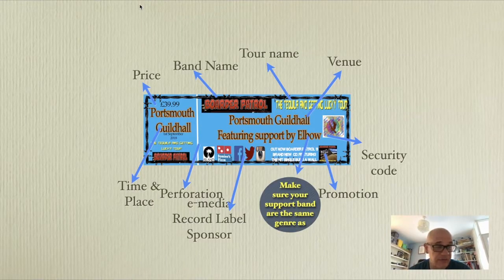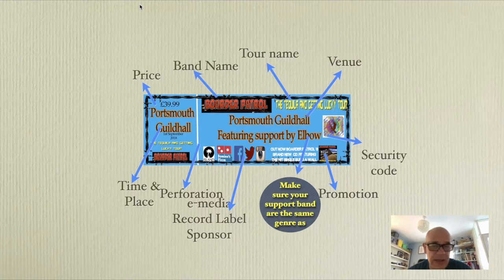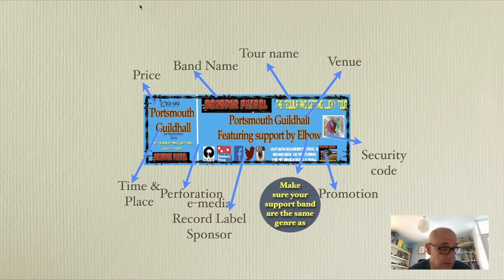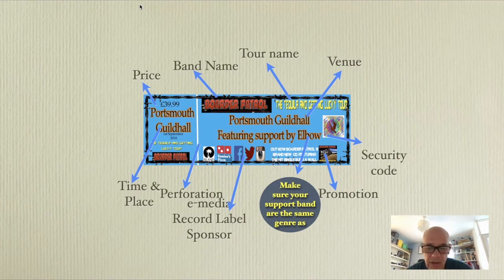You're going to need to make sure you keep the same color and the same font that you've used throughout your promotional campaign. You're going to need a price on there to see the band, obviously the band name, the tour name that you created in your last one, clearly where the ticket is for — so in this case it's Portsmouth Guild Hall — and they've got the supporting act of Elbow. Don't forget to get some promotion on there, like the CD that is out, and a security code to stop forgery.